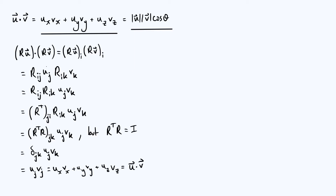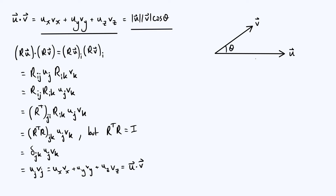So we've shown that the dot product is basis independent — if you rotate both vectors, or equivalently rotate your basis, the value of the dot product doesn't change. Now we're going to show why the component-wise definition of the dot product is the same as the definition in terms of the magnitudes of the vectors and the cosine of the angle between them. This derivation relies on the basis independence result we've just proved. I'll start by drawing a diagram of our two vectors.